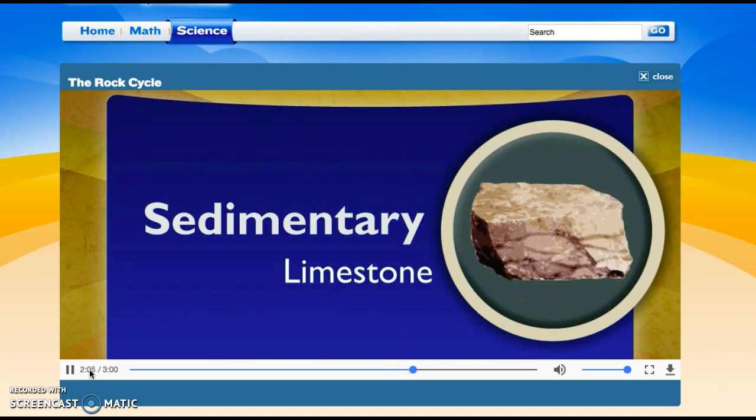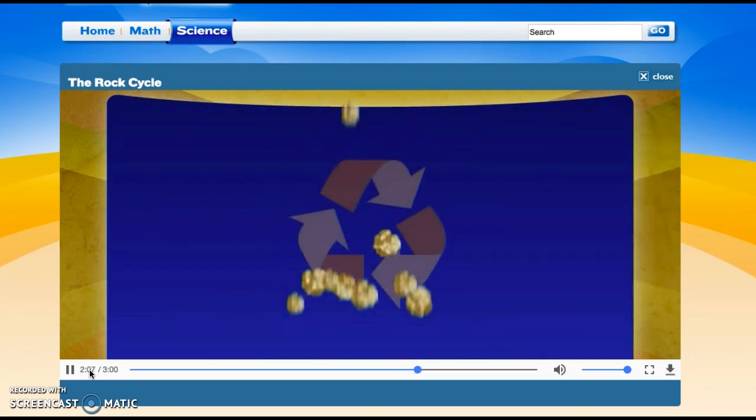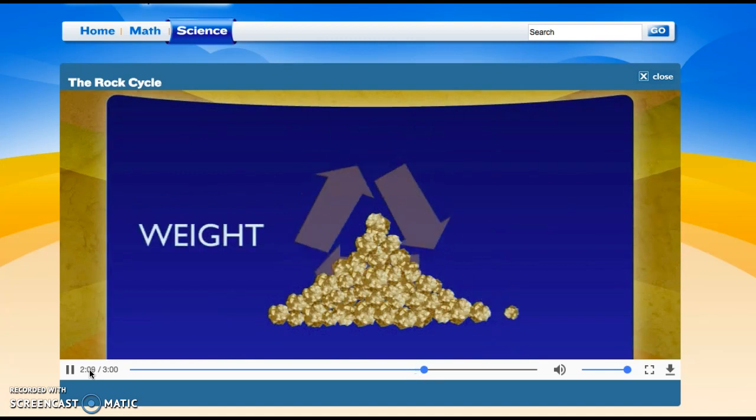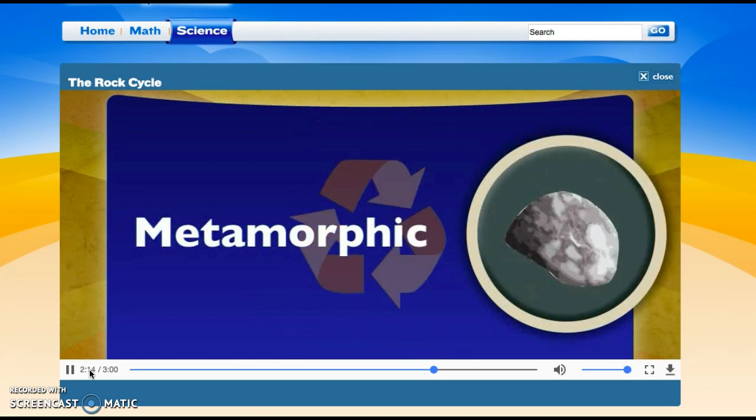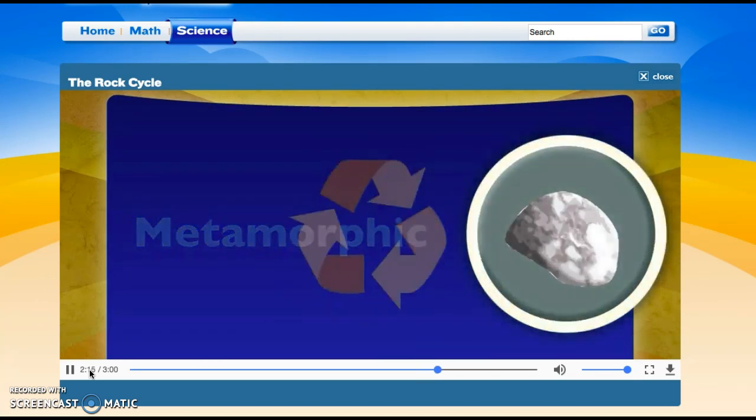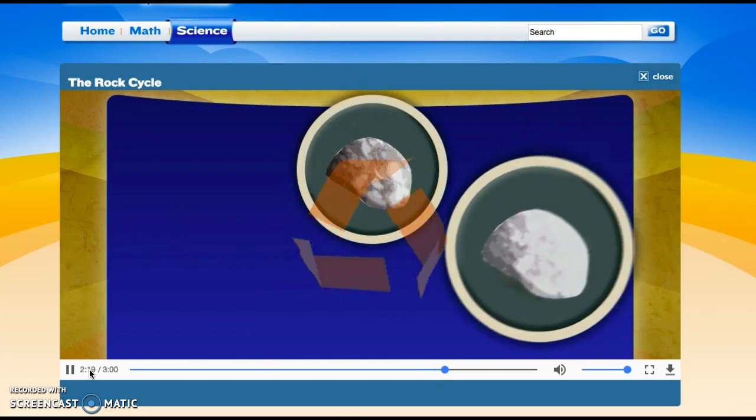And then? Well, the sedimentary rock keeps piling up on top of itself, and that weight and pressure creates heat that turns it into metamorphic rock. Marvelous metamorphic rock. Then the metamorphic rock melts into magma and then it cools into igneous rock.